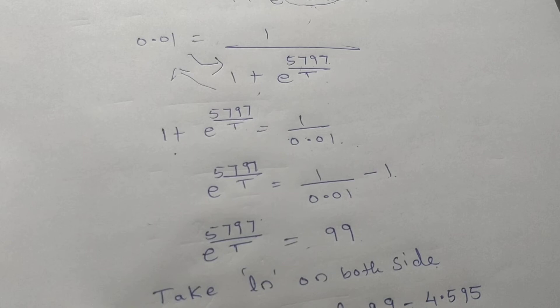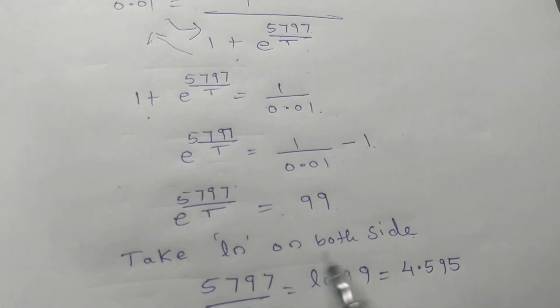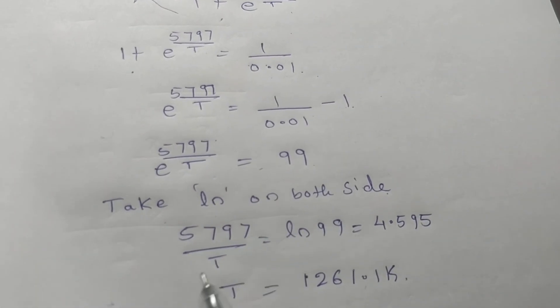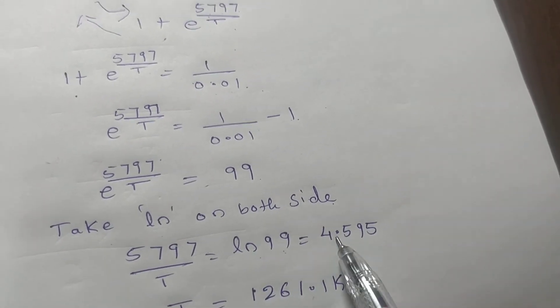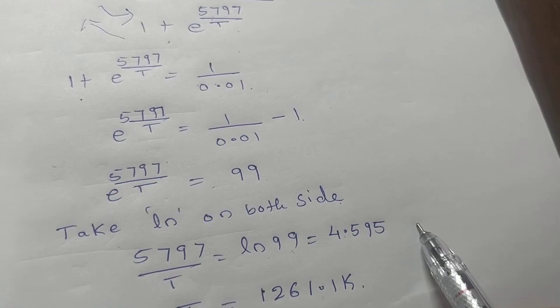When you take ln on both sides, you will get 5797 over T equals ln 99. Ln 99 value is 4.595. Okay, so we have to calculate for T.